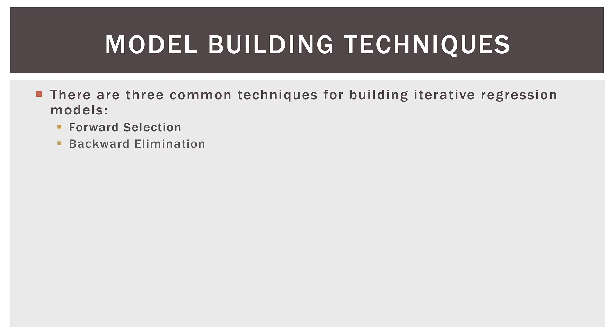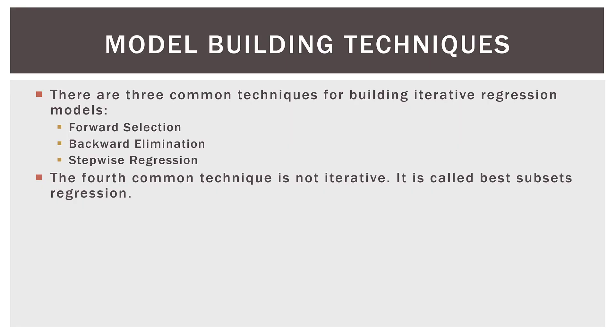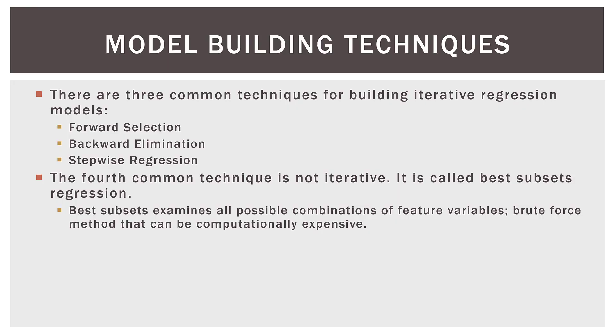To put things in context, just remember that there are three common techniques for building iterative regression models: forward selection, backward elimination, and this video, which is about stepwise regression. It's actually very popular — people gravitate to stepwise for some reason. The fourth common technique is not iterative; it's called best subsets, and that will be the next topic in this series. Best subsets examines all possible combinations of feature variables. It's sort of a brute force method that can be computationally expensive, and the output can be very, very long if you don't control it. The analyst can specify the maximum number of features in the final model, if they so choose.